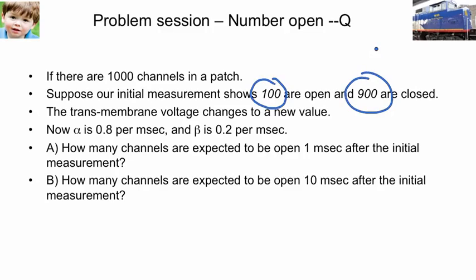The transmembrane voltage changes to a new value. That means there are new values of alpha and new values for beta. The new values for alpha and beta: alpha is 0.8 per millisecond, beta is 0.2 per millisecond. You notice that alpha and beta are rate constants, so they are per some unit of time.